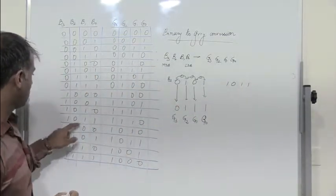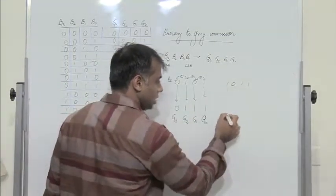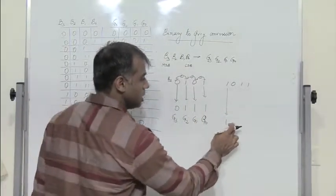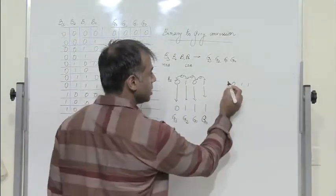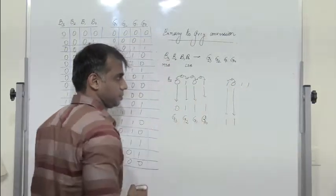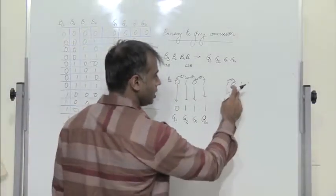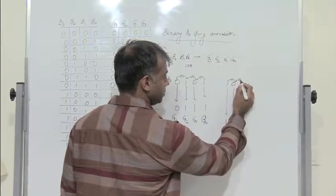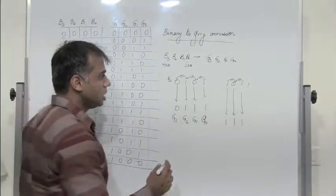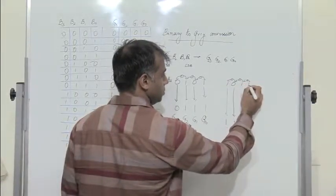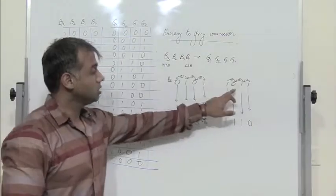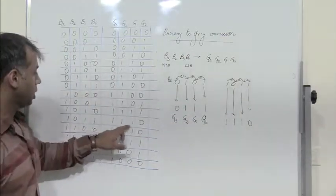So I have 1, 0, 1, 1. G3 is nothing but B3 written as it is — 1. What is G2? The next bit — it is XOR of these two: 1 XOR 0 is 1. What is G1? XOR of these two bits: 0 XOR 1 is 1. And what is G0? G0 is XOR of these two, which is 0. So I get 1, 0, 1, 1 → 1, 1, 1, 0.